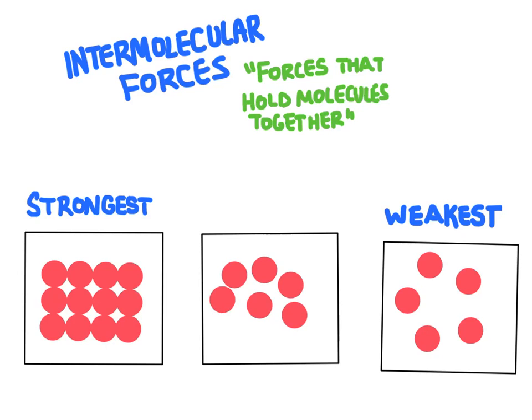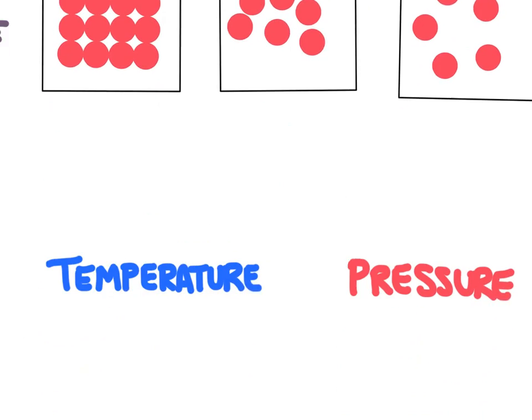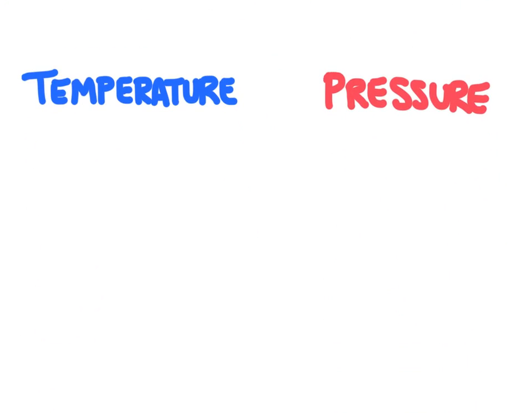Now overcoming these forces of attraction is going to depend on two variables: temperature and pressure. Temperature is the amount of kinetic energy the particles have, and kinetic energy is the energy of motion. So the more kinetic energy, the faster the particles are moving. In terms of temperature, that would be the hotter the particles, the faster the particles will be moving.